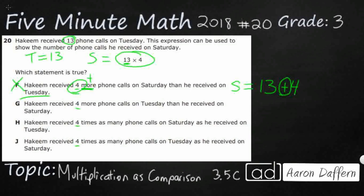Let's look at G. Hakeem received four more calls on Tuesday than he did on Saturday. And that's a little bit more confusing because Tuesday, and so we're going to say Saturday now is going to be this 13, and then we're going to take away four because he got four more on Tuesday than he did on Saturday. And all we know is Tuesday is 13.